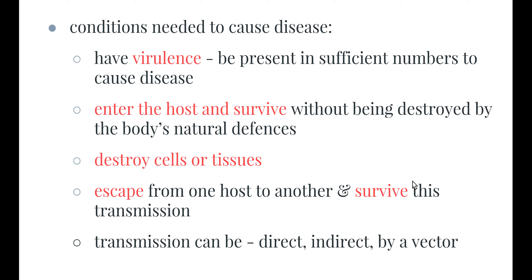Pathogens often destroy cells or tissues depending on their type. Viruses in particular cannot survive unless they overtake a cell within our body. Pathogens are also able to escape from one host to another and survive this transmission. Different pathogens have different forms of transmission — transmission can be direct, indirect, or by a vector.